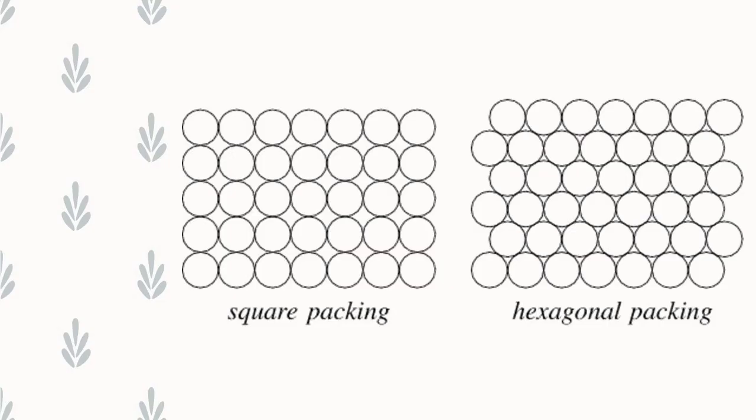In the problem it is given the stand is in the shape of a square and the pencils are cylindrical. We are going to place cylindrical pencils in a square shaped stand, and this problem is equivalent to placing circles in a square box.